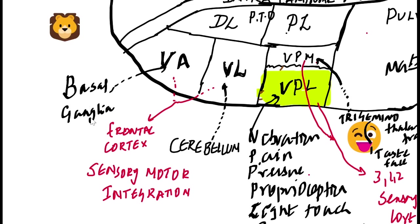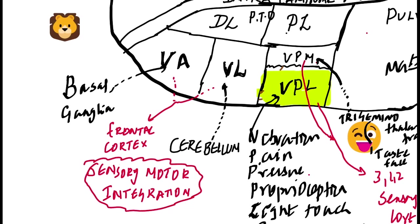Basal ganglia is connected. The motor is connected. Sensory-motor coordination is by the ventral anterior and ventral lateral nuclei.